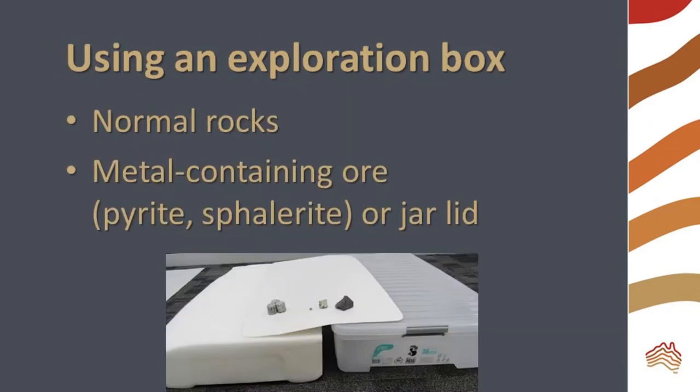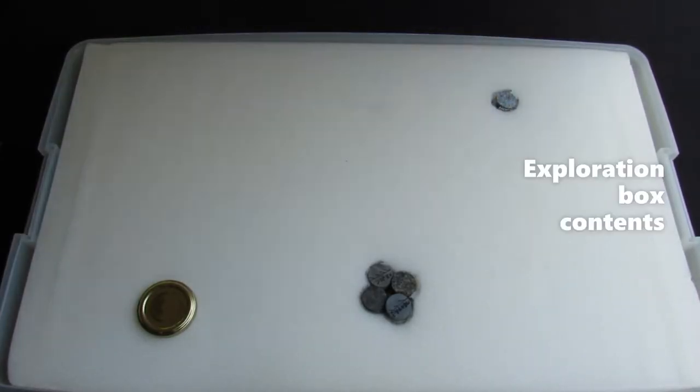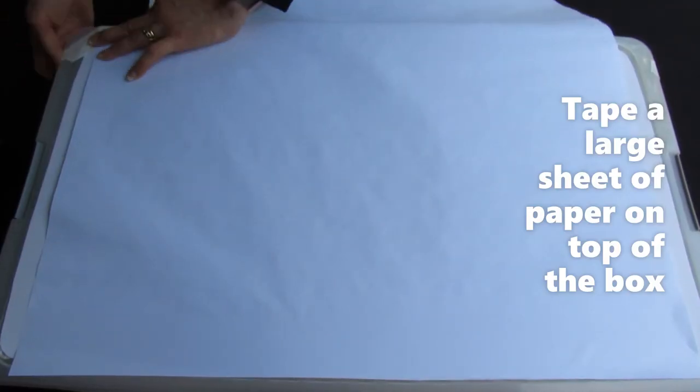You can make an exploration box using a box filled with foam containing rocks and real ore or a metal jar lid. Tape a large sheet of paper on top of the box and mark a corner to calibrate the stud finder.